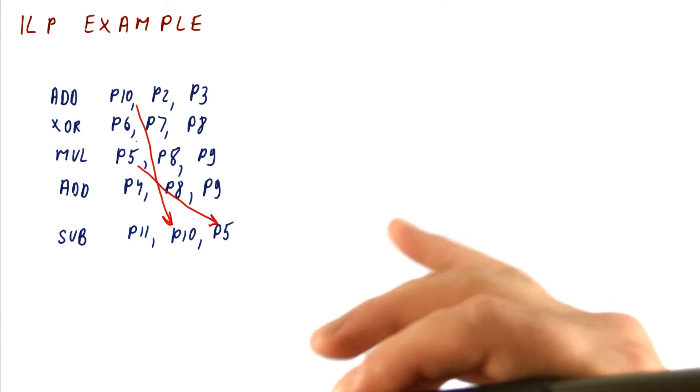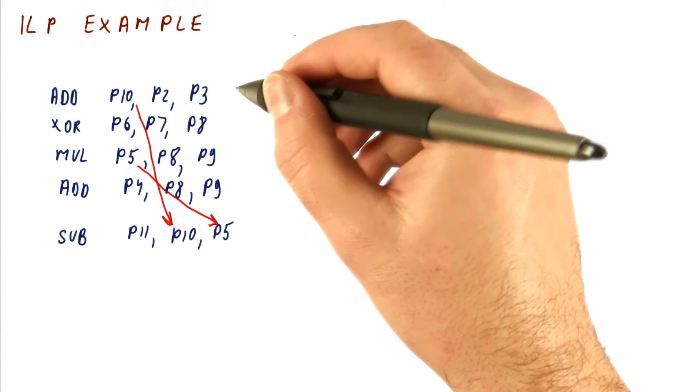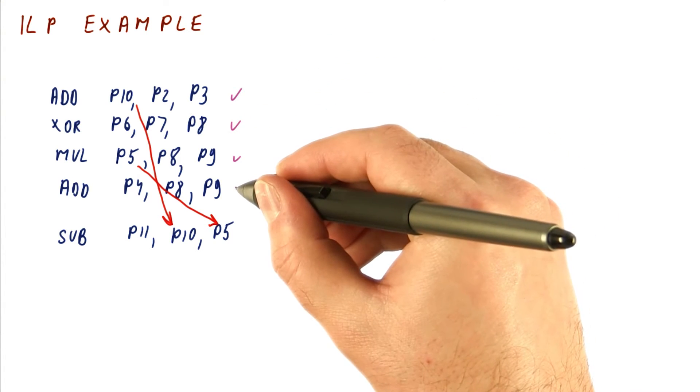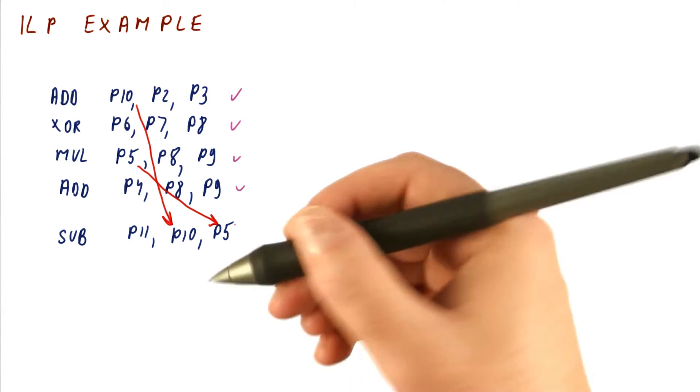Now let's look at what can execute in which cycle. To do that, the best way is to check off instructions and count cycles. In the first cycle, we can do this, this, this, and this, because none of these instructions has any incoming dependencies yet.